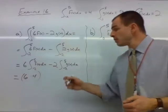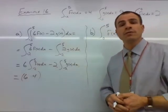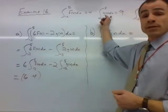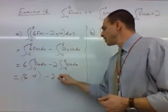And then we can use substitution again because we also have an integral from negative 2 to 5 for g. That's equal to 9. So we have minus 2 times 9.